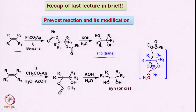If one wants to get a cis or syn-diol, the Woodward modification — in which water is added — leads to a syn or cis diol. The main important intermediate is a cyclic intermediate having a positive charge on the middle carbon.